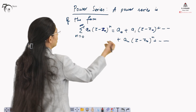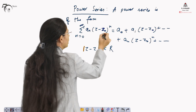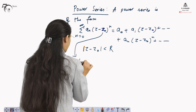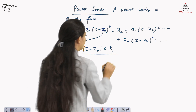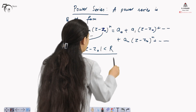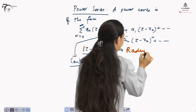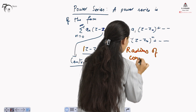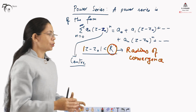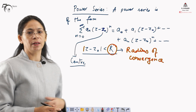This series holds for |z minus z₀| less than or equal to r. Here z₀ is called the center of the circle, and if |z minus z₀| is less than r, then r is called the radius of convergence. The power series will be convergent within this radius, centered at z₀.